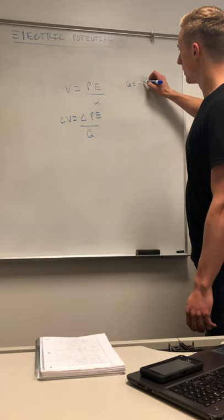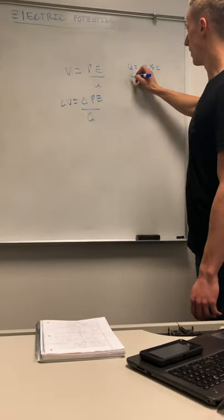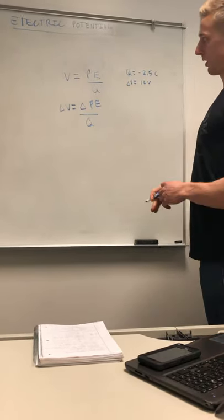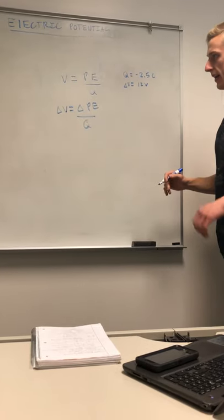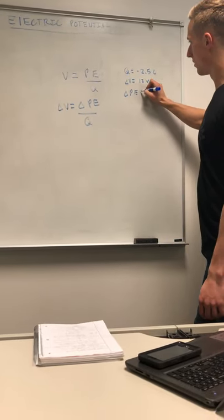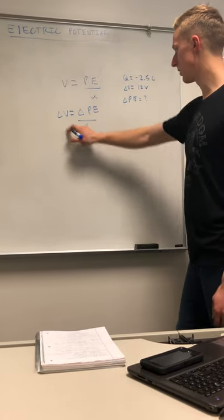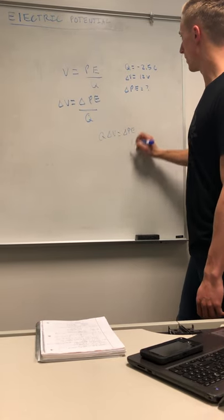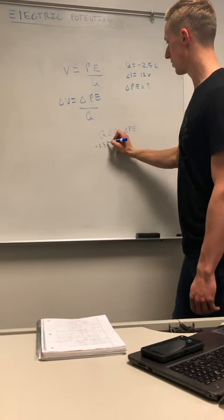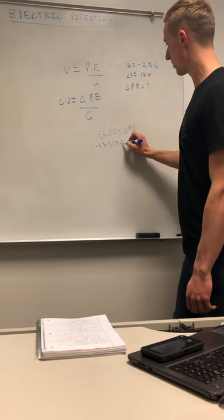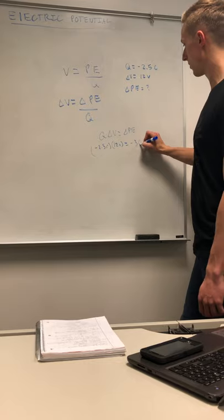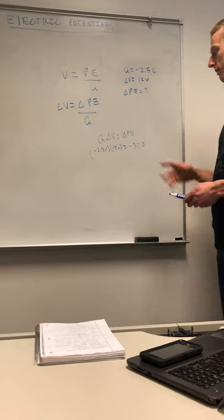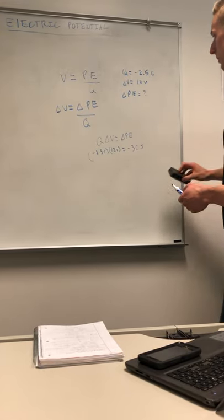For another problem, we have a charge of negative 2.5 coulombs and a change in voltage of 12 volts, and we want to find the change in potential energy. Rearranging, Q times delta V equals the change in potential energy. Plugging in: negative 2.5 coulombs times 12 volts gives us negative 30 joules as the change in potential energy.